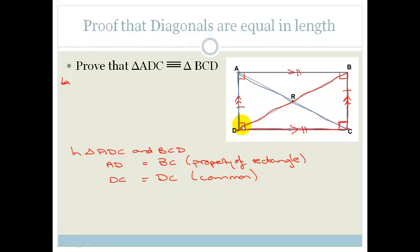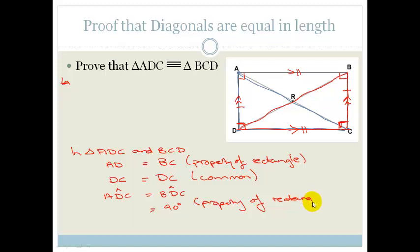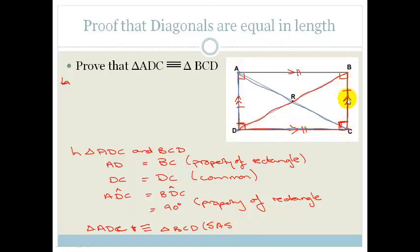And finally, we know that angle ADC equals angle BCD, which equals 90 degrees — again because this is a property of a rectangle. So we therefore have triangle ADC congruent to triangle BCD, by Side-Angle-Side (SAS).